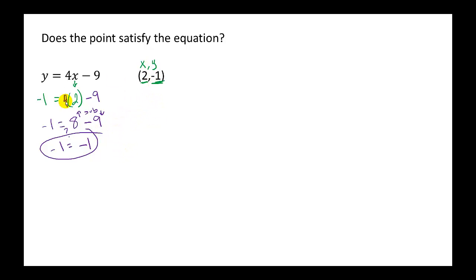So this point satisfies the equation. That means this point is a solution. If we were to graph this, the point would be on the line of that equation.